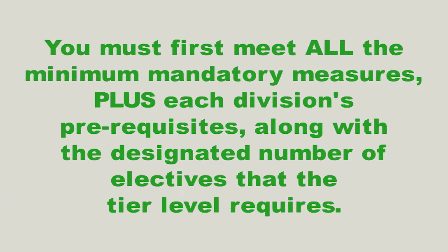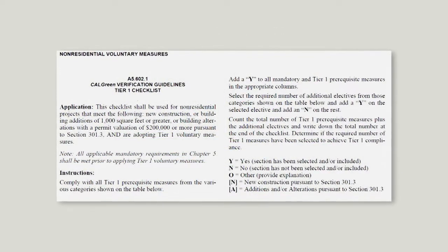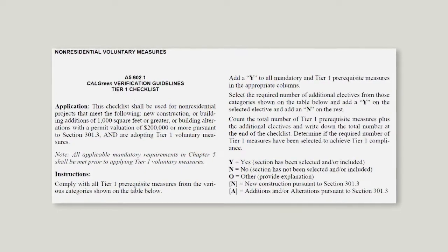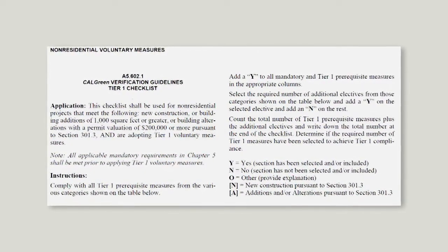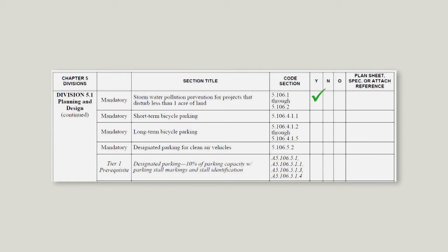Simply put, to achieve a Cal Green Tier 1 or Tier 2, you must first meet all the minimum mandatory measures plus each division's prerequisites along with the designated number of electives that the tier level requires. To make Cal Green more user-friendly, there are detailed checklists provided in each new edition of the Cal Green Code and in CBSC's non-residential Cal Green Guidebook. The checklist assists code users in verifying compliance with the mandatory provisions of Cal Green and the voluntary tiers if required or desired.